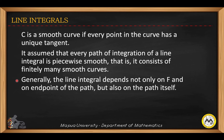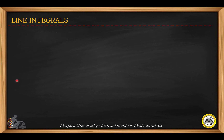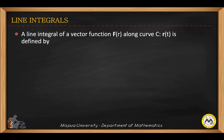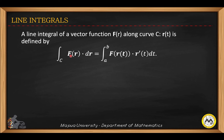Generally, the line integral depends not only on the vector f and on the end points of the path, but also on the path itself. A line integral of a vector function f along a curve c is defined as the integral of the dot product of f, which is a function of r, and the derivative of r. When we simplify, we integrate from a to b along the curve c, applying f of r(t) dotted with the first derivative of r, then integrate with respect to t.